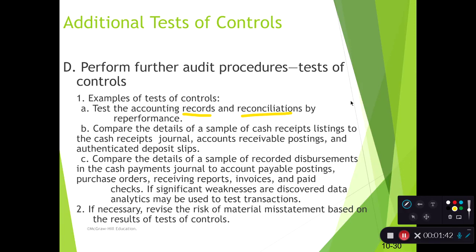For example, if an accounts payable shouldn't be set up until a three-way match is performed, do we see documentation of that? If there's supposed to be a bank rec, do we see the bank rec being performed? Specifically for cash, you can look at the cash receipt listing — basically a list of all payments the client has received from its customers — and compare that against the cash receipts journal to make sure those are all accounted for.